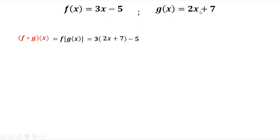Then simplify: 3 times 2 is 6x, 3 times 7 is 21, then minus 5. Combine like terms: 6x, then 21 minus 5 is 16. So the answer is 6x + 16.